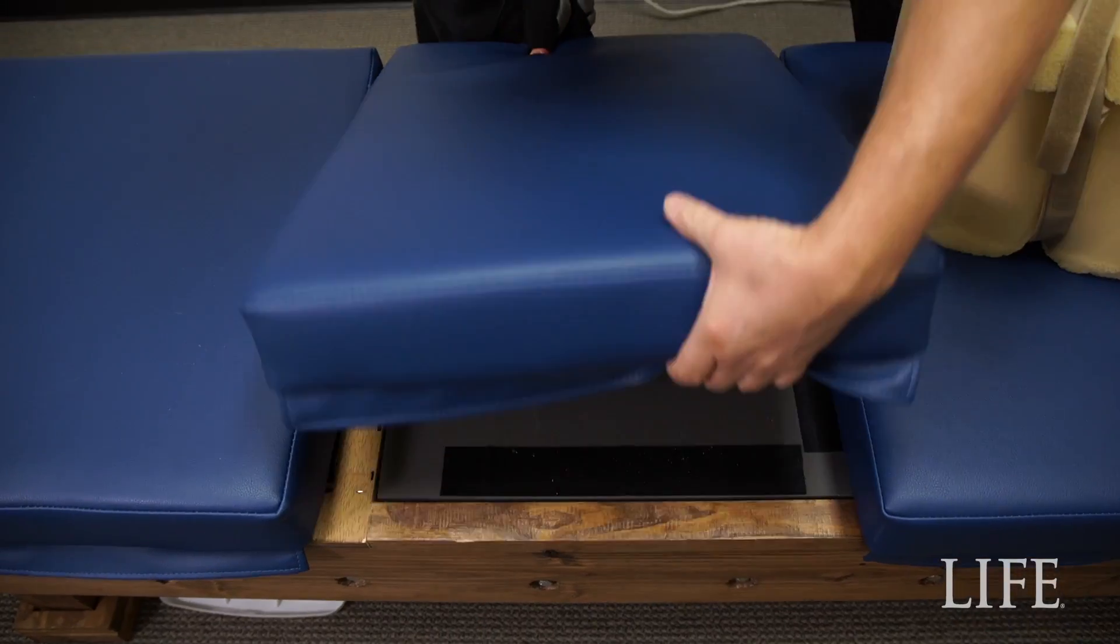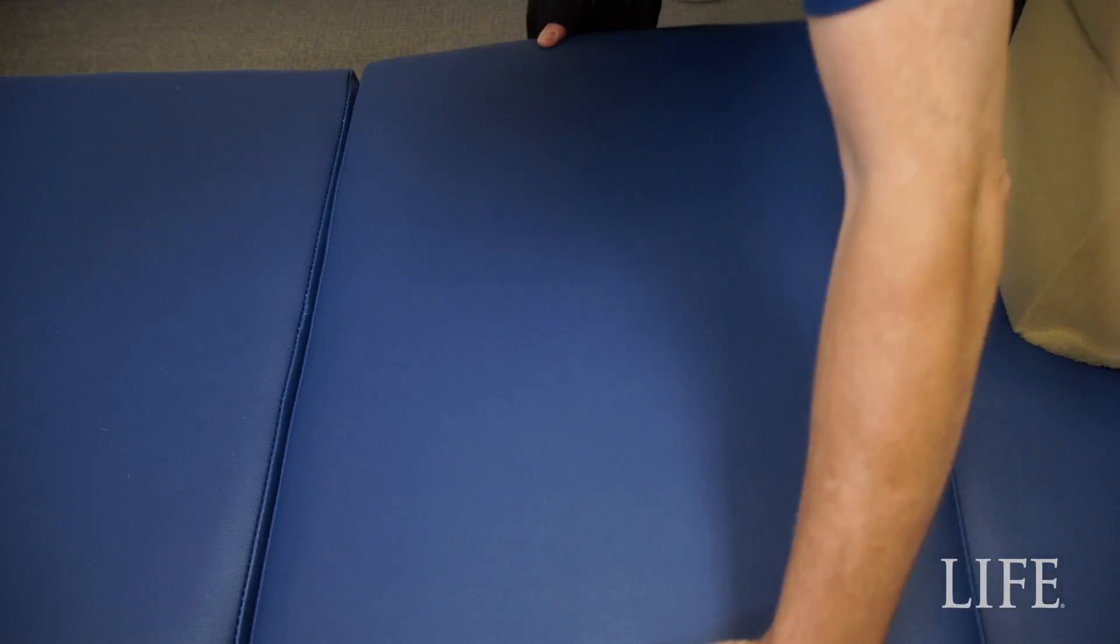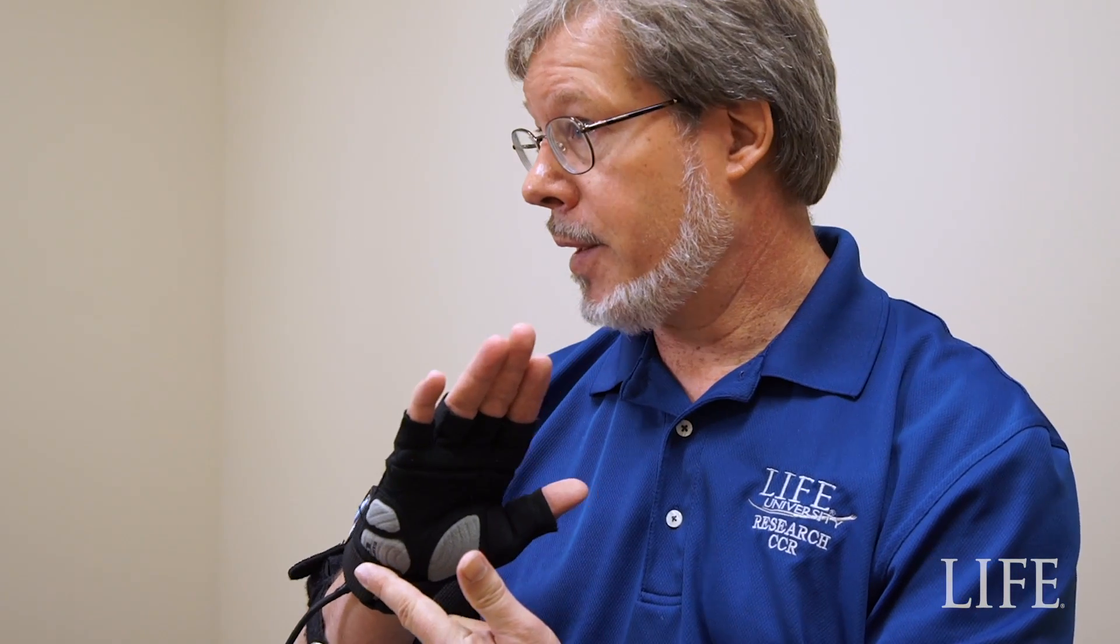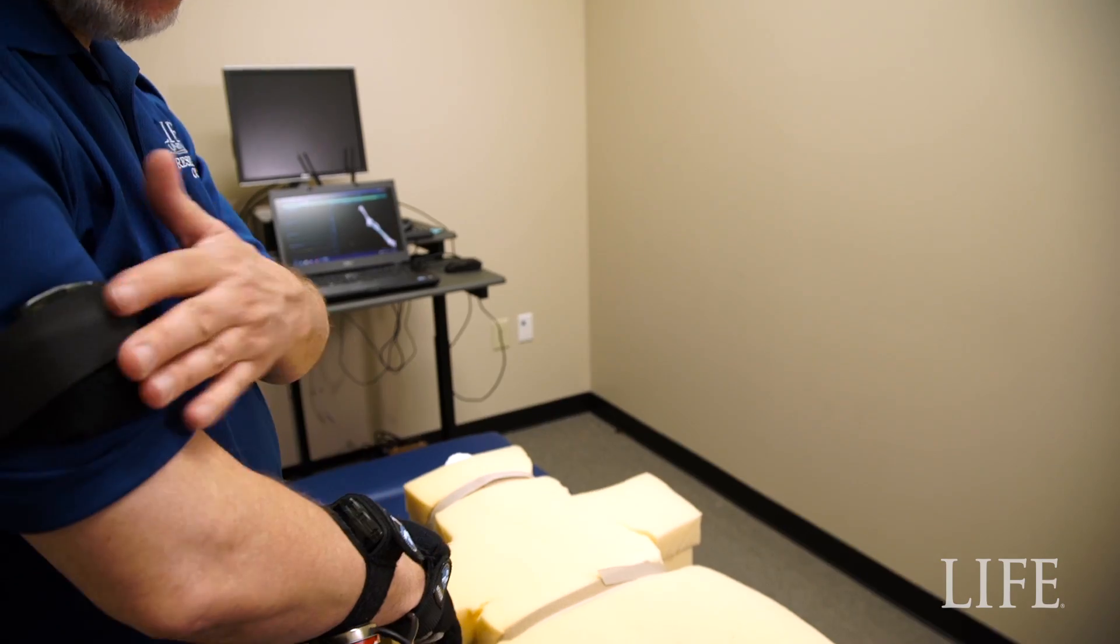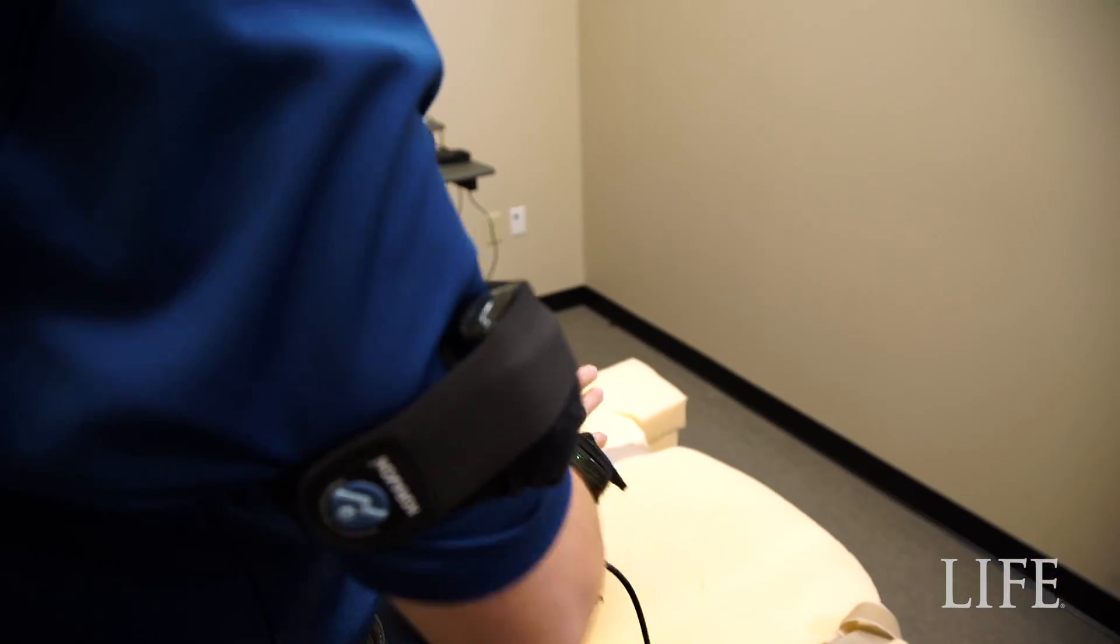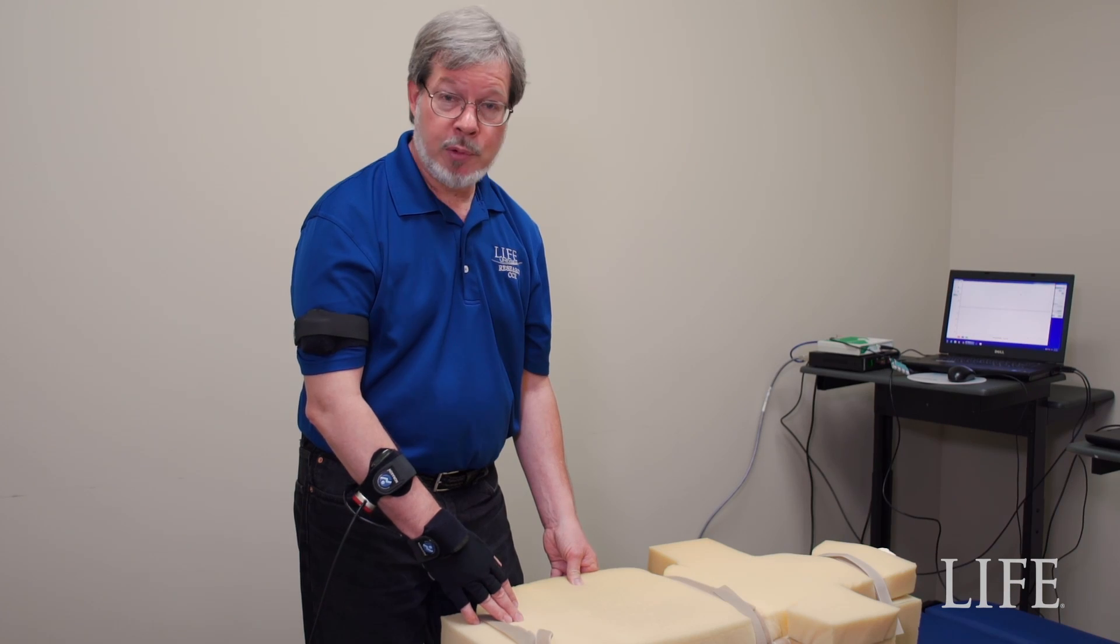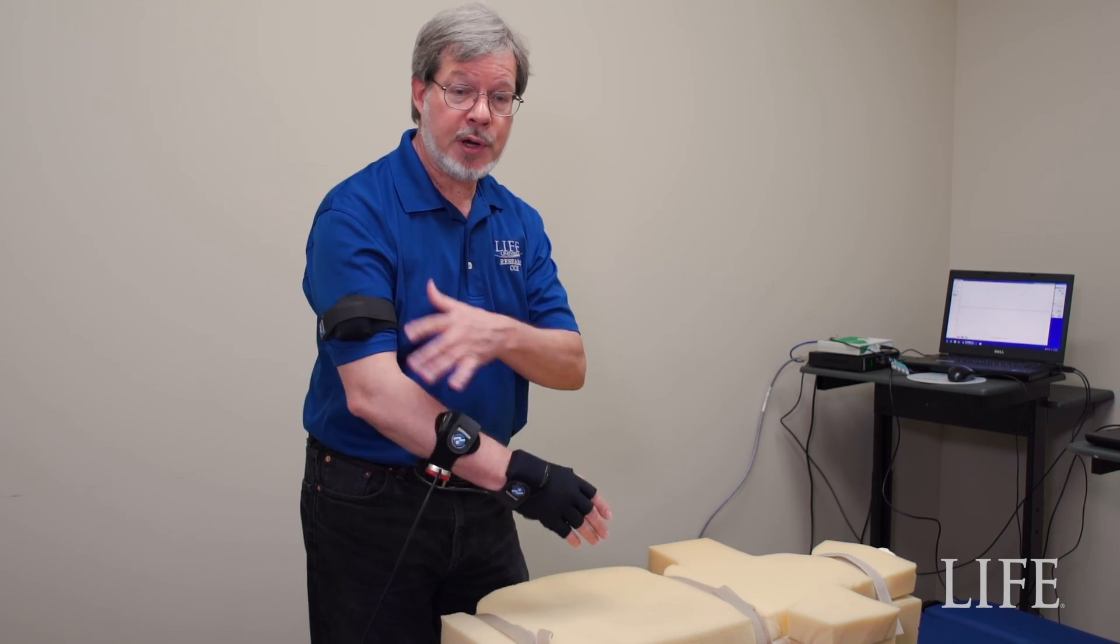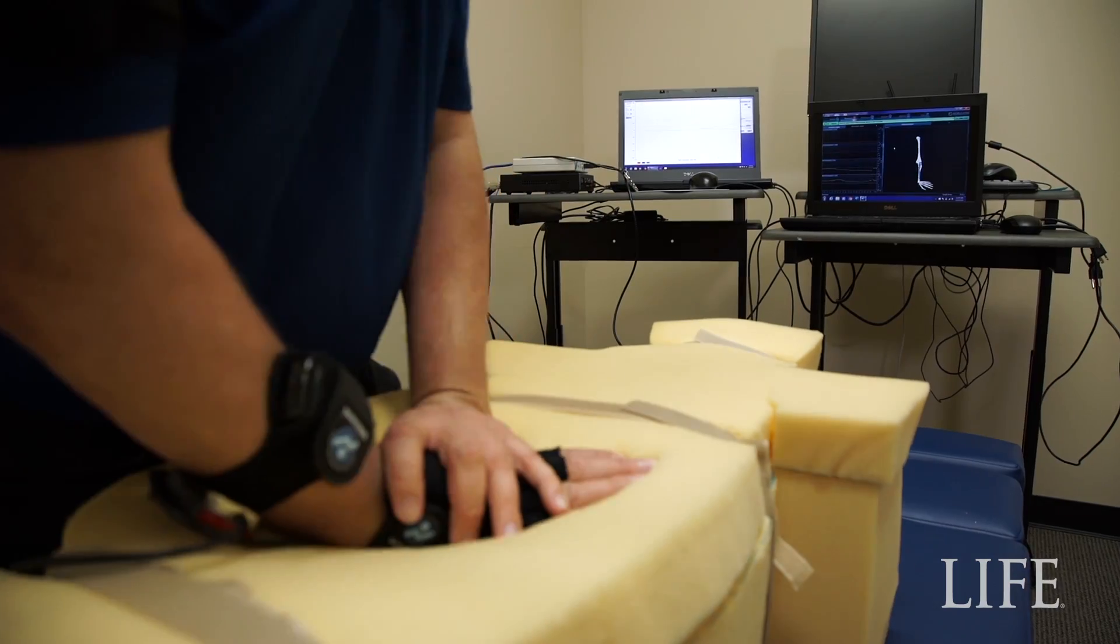This is sort of a ten thousand dollar bathroom scale that measures forces in three dimensions. We're developing a system where we can measure the amount of force coming out of the hand with this glove. We can measure the direction that the hand, forearm, and arm are moving in while performing a thrust, so we really have four systems at once: force in the hand, motion of the arm, force into the table, and direction of the force in the table.